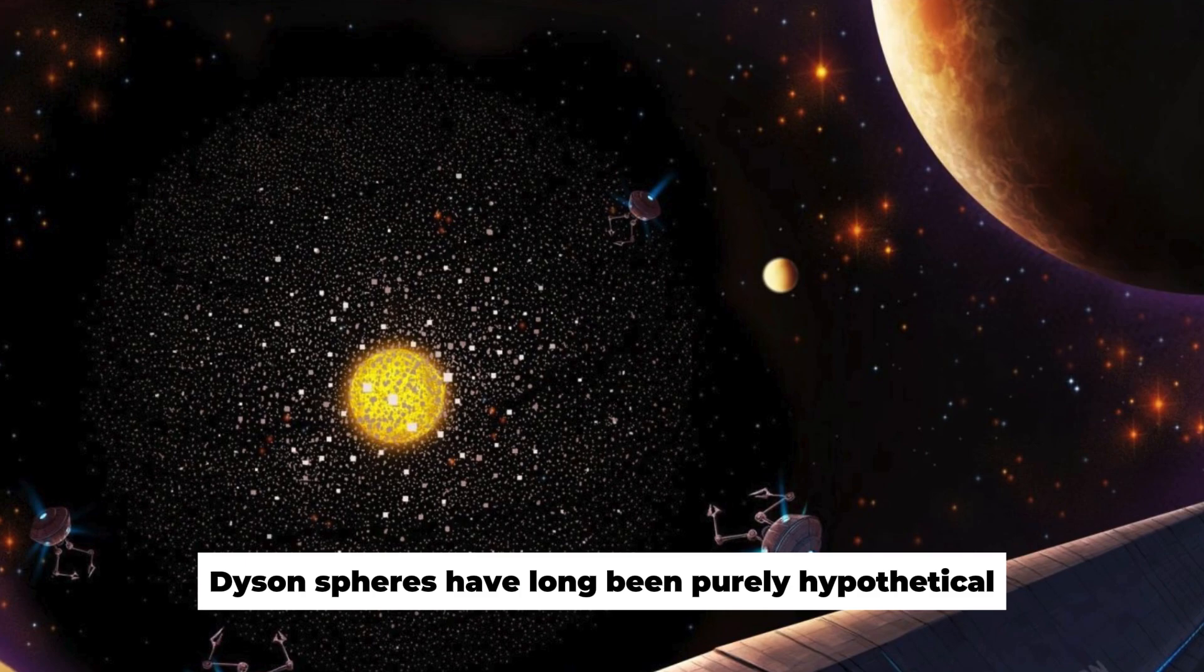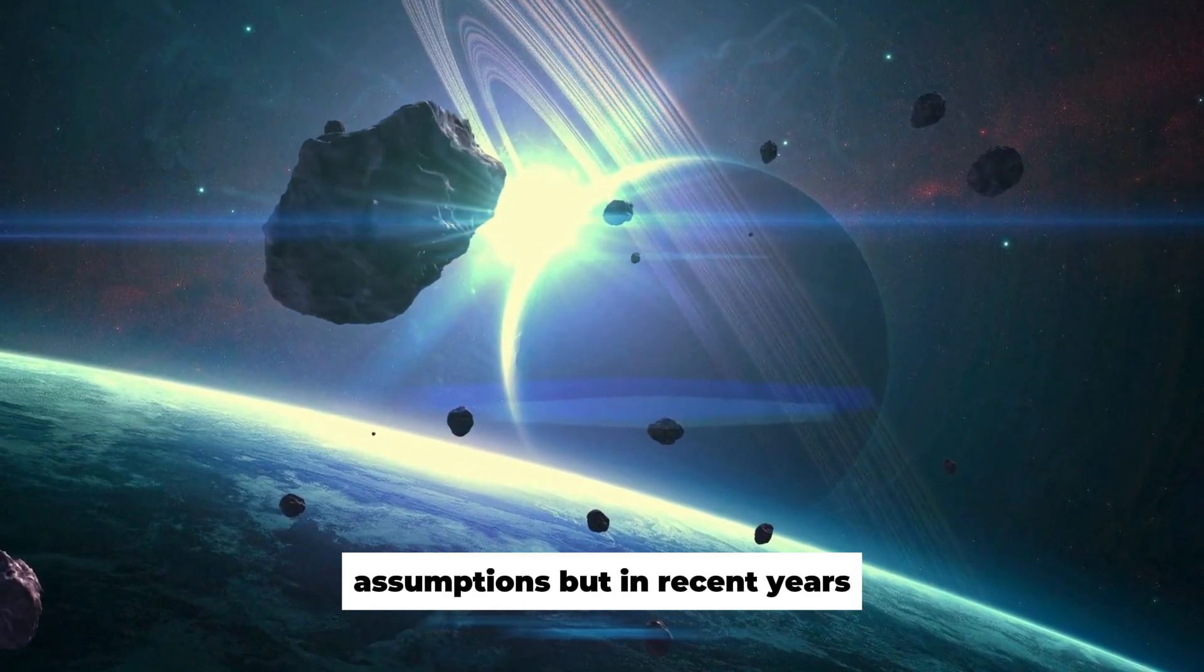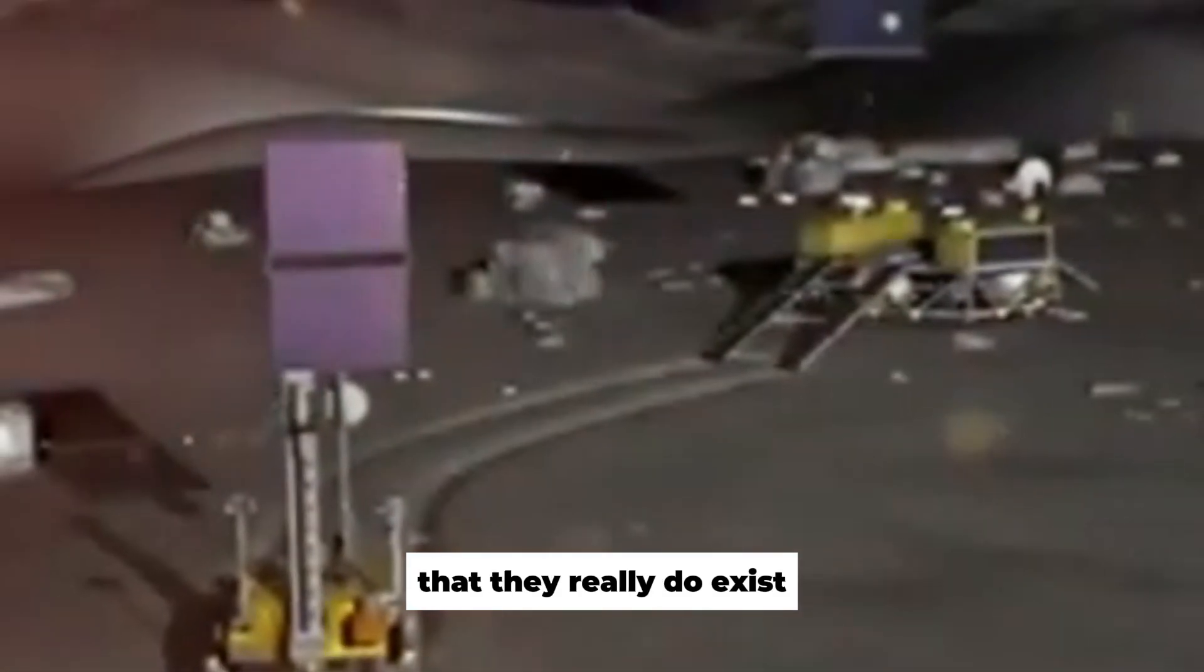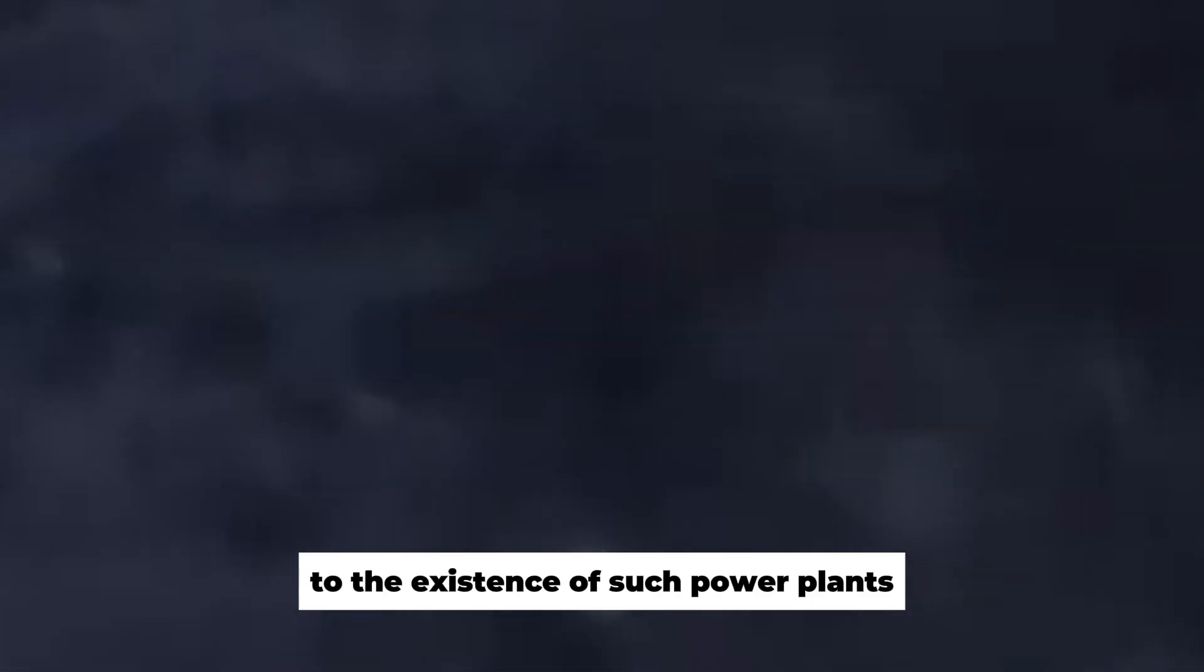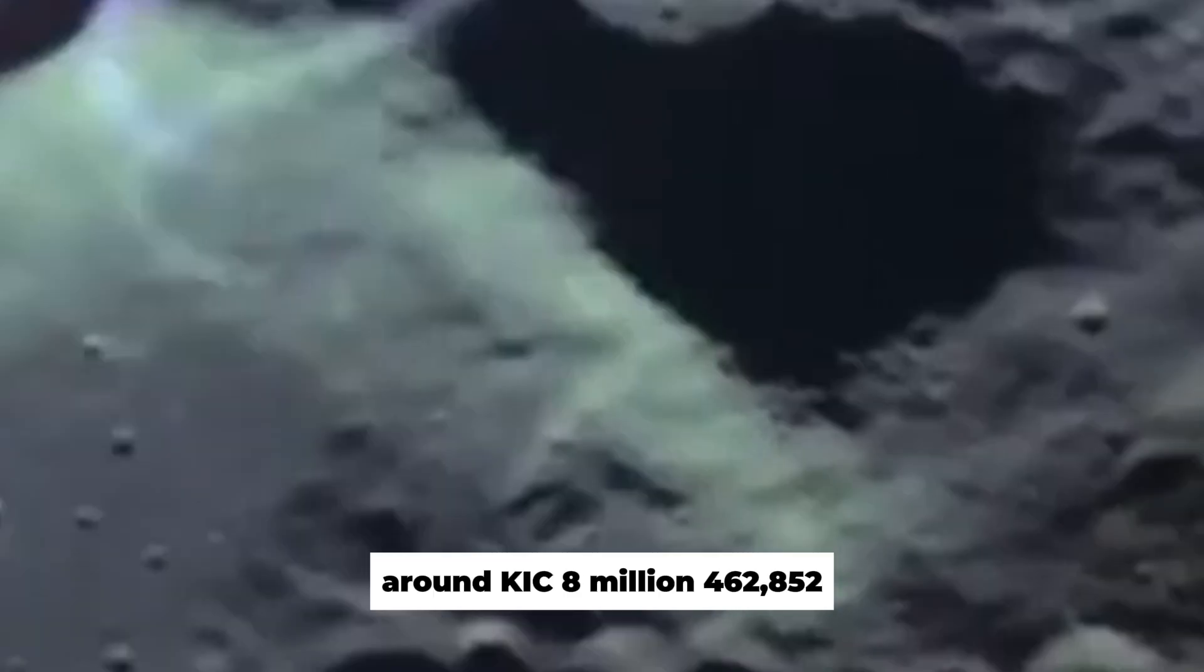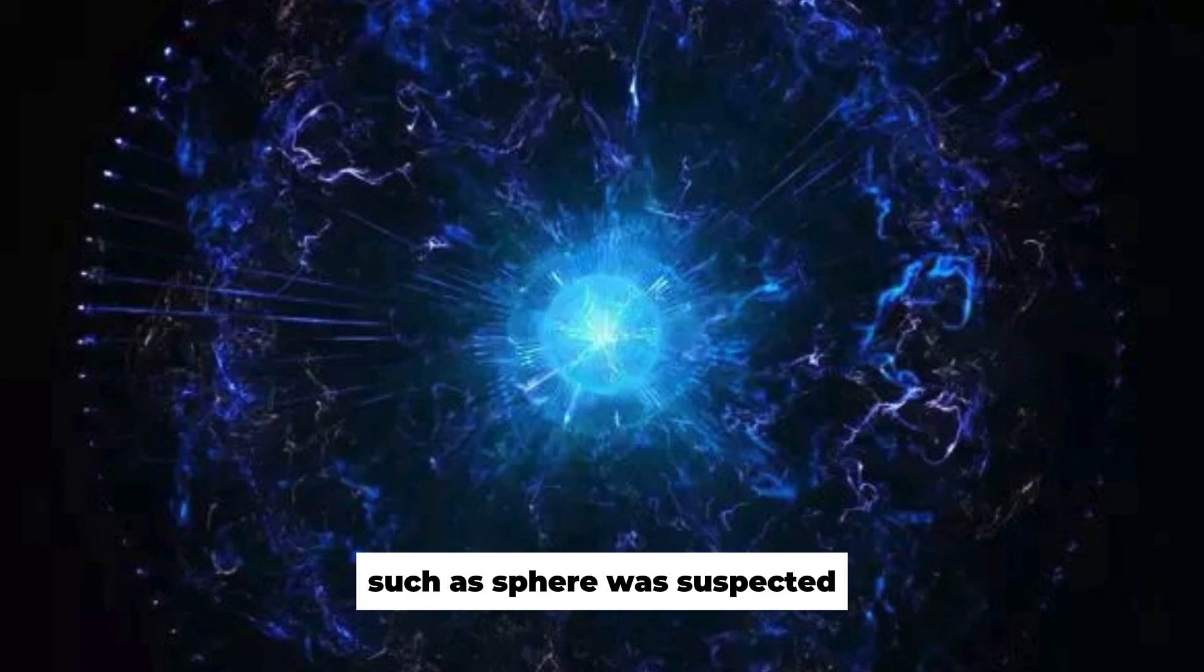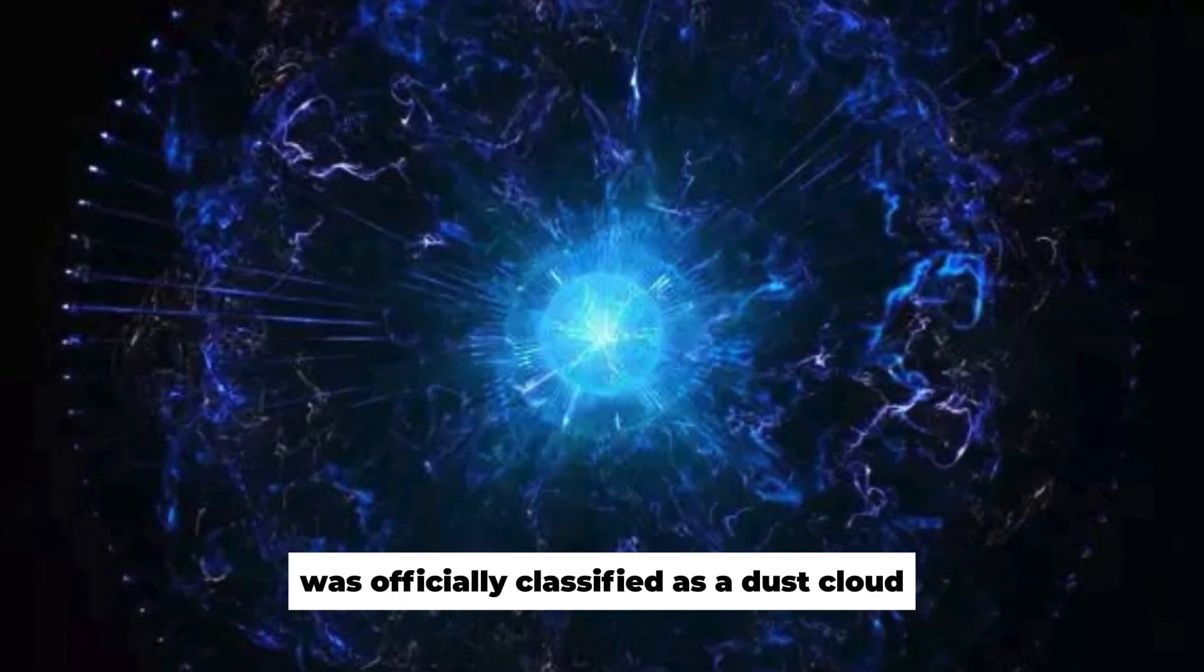Dyson Spheres have long been purely hypothetical assumptions, but in recent years, researchers have found more evidence that they really do exist. Some unexplained phenomena in the universe point specifically to the existence of such power plants around KIC 8,462,852, also known as Tabby's Star. Such a sphere was suspected until the eclipse was officially classified as a dust cloud.